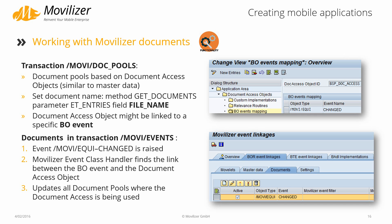The Movilizer transaction movie doc pools has been introduced. The transaction enables you to manage Movilizer documents in the same manner as you also manage your master data today. You can also link a document or document access object to events so you can update your documents based on events in your SAP system, keeping your documents in the Movilizer cloud up to date at all times.